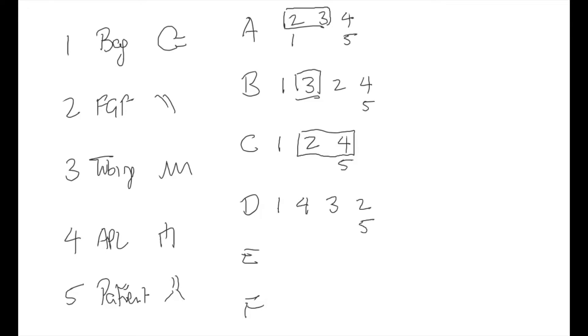E, being the fifth letter, will require you to delete 1 and 4, which equals 5. And F is an open one, followed by 3, 2, and 5.